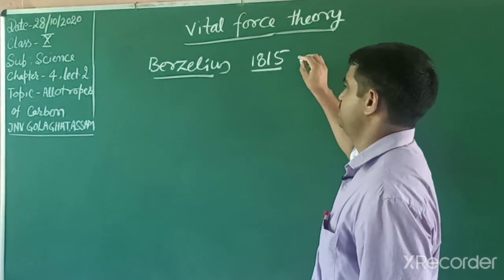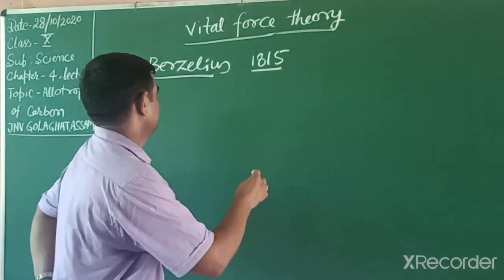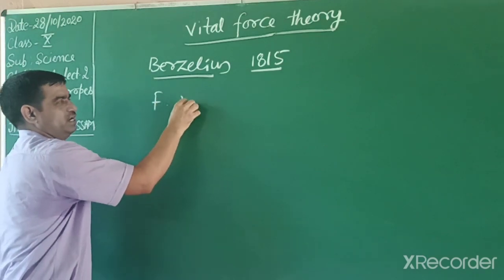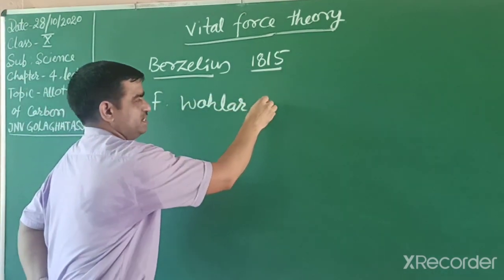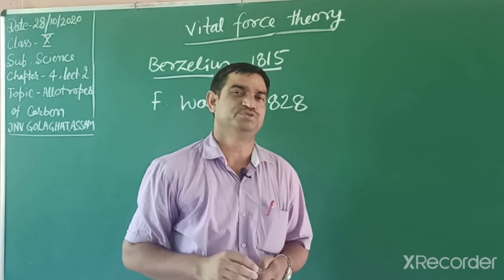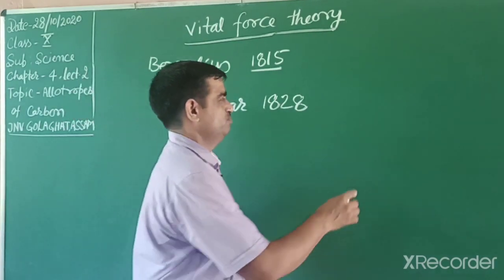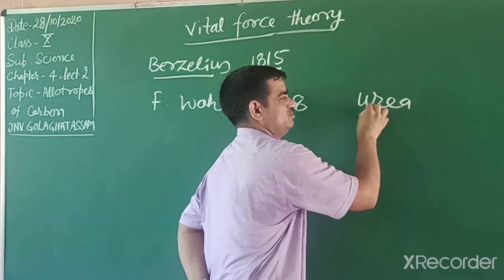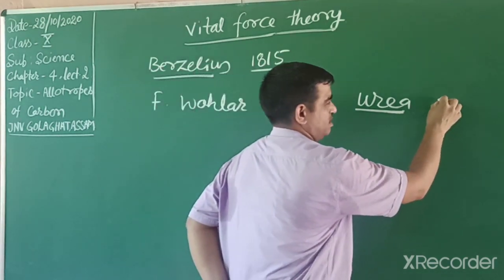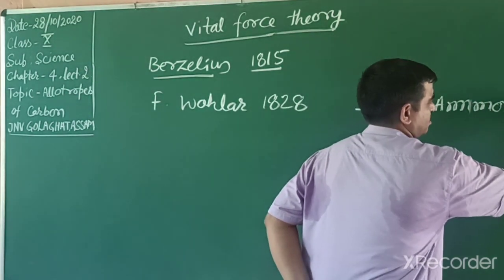But a German scientist, Friedrich Wöhler, in 1828 prepared the first organic compound - urea - in the laboratory from an inorganic compound known as ammonium cyanate. The molecular formula of ammonium cyanate is NH4CNO.